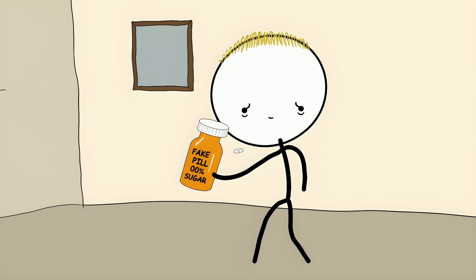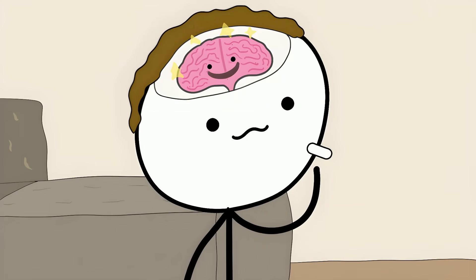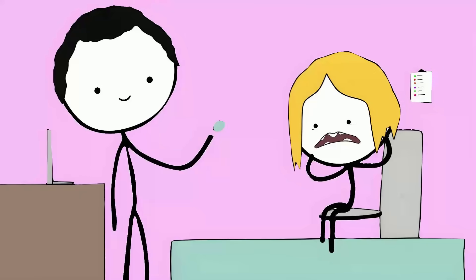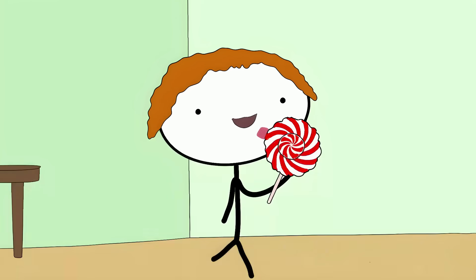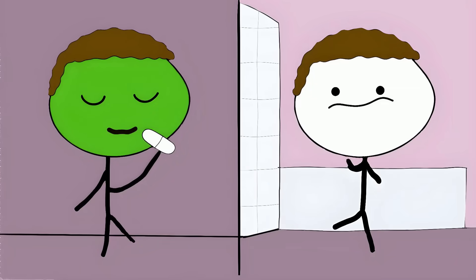Even when people know they're taking a fake pill, it can still work. Just the ritual of taking a pill can fool your brain into healing mode. In one study, they gave migraine sufferers sugar pills but told them it was medicine. Half of them felt better from eating literal candy. This isn't just about pain either. Placebos can help with nausea, insomnia, and even mood problems.